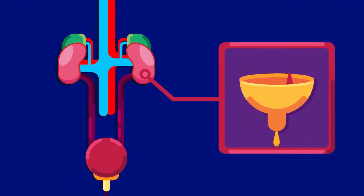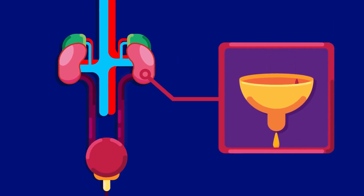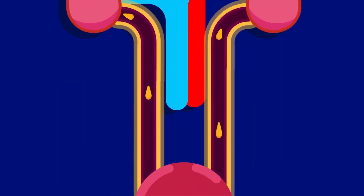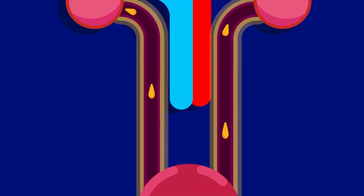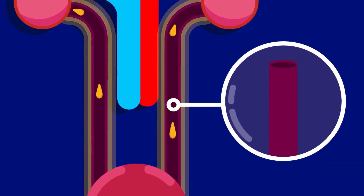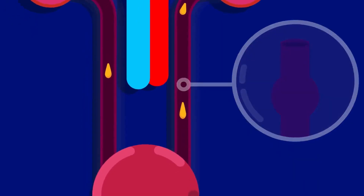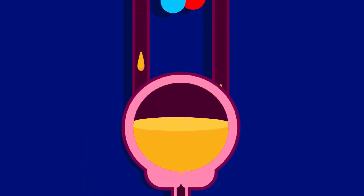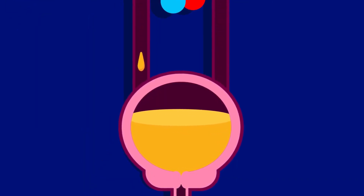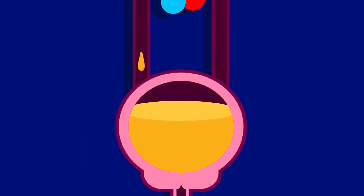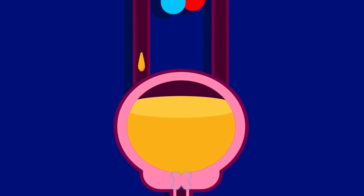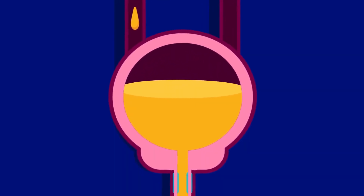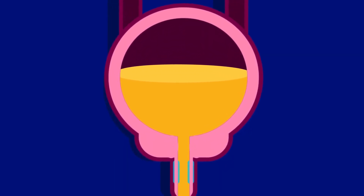The kidney filters blood and excretes the waste as urine. The ureter is the tube that transports urine from the kidney to the urinary bladder, moving urine through peristalsis and by gravity. Inside the urinary bladder, which is the muscular bag that acts as temporary storage, urine is held for later discharge. The sphincter muscle controls the flow of urine and relaxes to release urine. The urethra carries urine out of the body.